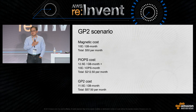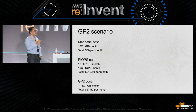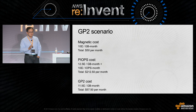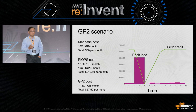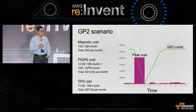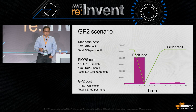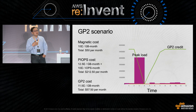So you decide to move your database to GP2, which costs only marginally more at 11.5 cents per gigabyte per month — storage totaling $57.50. You run your report and notice that with the ability to burst to 3,000 IOPs, the report gets generated within two hours and is done by 4 a.m. with plenty of time to spare. You use up all your credits, but you replenish them throughout the day when your usage is low.